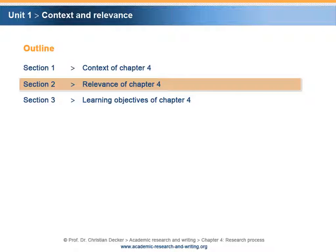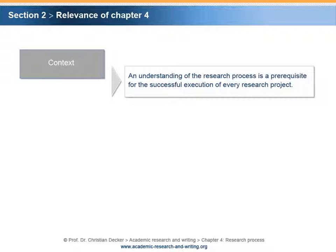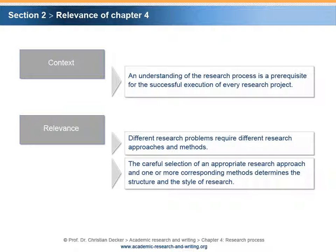Section 2: Relevance of Chapter 4. After the nature of academic research and writing, the implied academic principles, and the underlying research logic were discussed, the next step is to elaborate on the research process. An understanding of the research process is a prerequisite for the successful execution of every research project. Different research problems require different research approaches and methods. A careful selection of an appropriate research approach and corresponding methods determines the structure and the style of research.